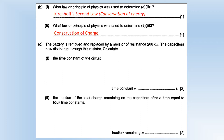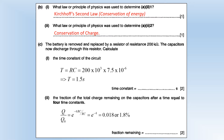The battery is removed and replaced by a resistor of 200 kilohms, and the capacitors discharge through it. The time constant T = RC gives us a time of 1.5 seconds. To calculate the fraction of total charge remaining after four time constants, we use Q/Q₀ = e^(−t/T). With T equal to four time constants, that's e^(−4), which is about 0.018 or 1.8%. As a general rule, we consider a capacitor discharged after five time constants, so we expect it to be fairly close to discharged.